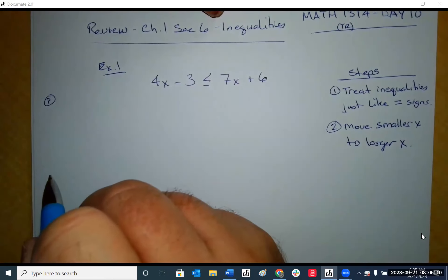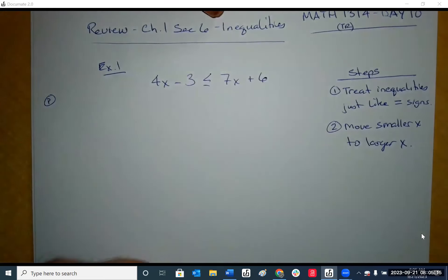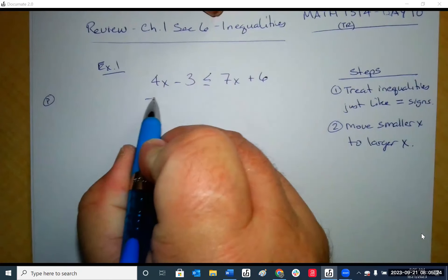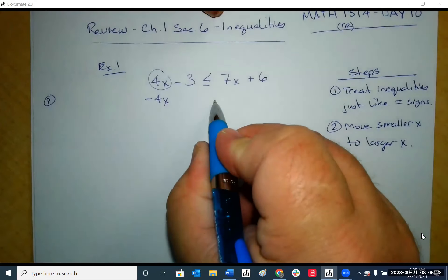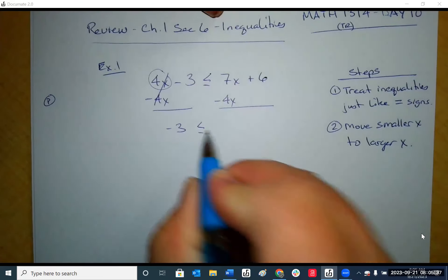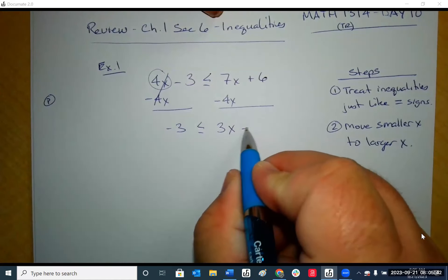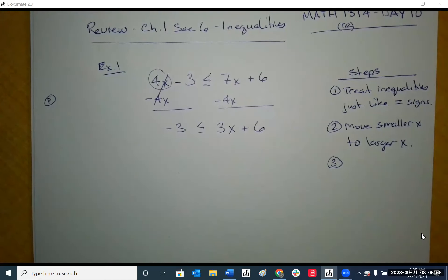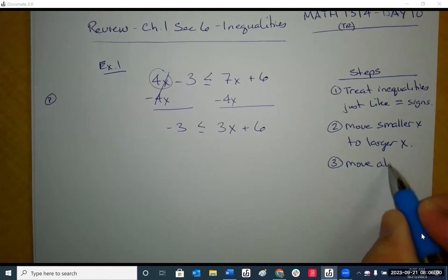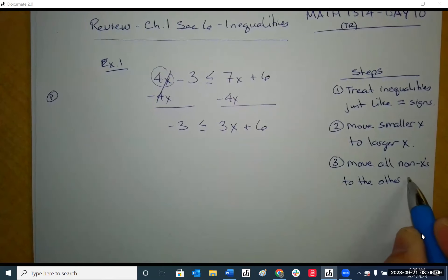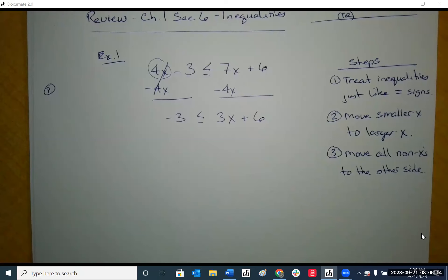We have to have the x's on one side first. Subtract 4x from both sides — we want to move this entire number to the other side. So if these cancel, we have negative 3 less than 7 minus 4, which is 3x. We have all the x's on one side. What's the next step? Move all non-x's to the other side, because you want x's on one side, everything else on the other side.